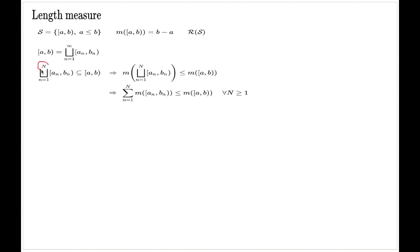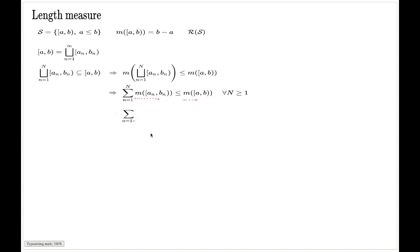This inequality is true for any n — I made this truncation with an arbitrary choice of n. Since this is a sum of numbers less than or equal to this number, if you push n to infinity you end up with the series of numbers being less or equal than this number. That gives the one-sided inequality of the Sigma additivity property.